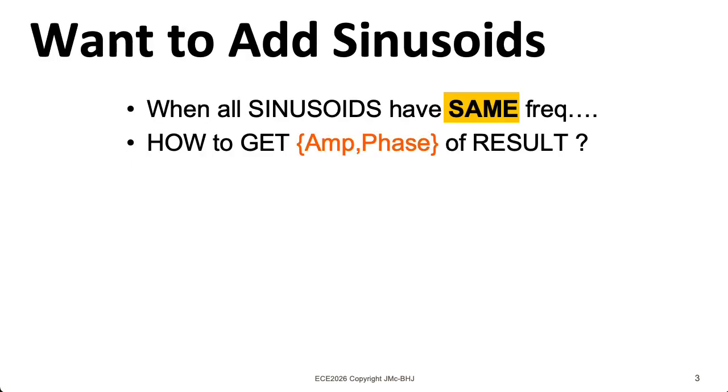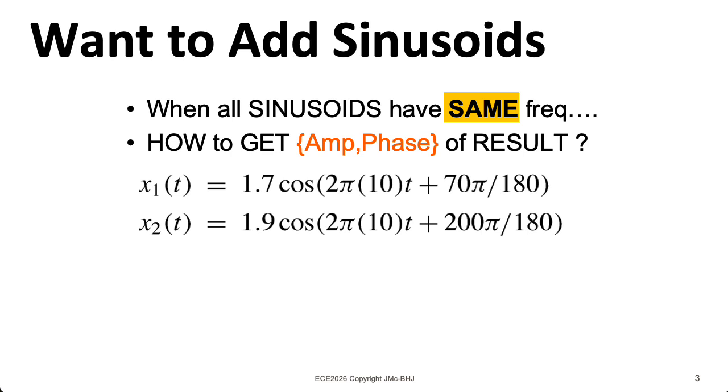Here's an example. Suppose we have these two sinusoids. They both have a frequency of 10 hertz. They have slightly different amplitudes, but very different phases. Here we represent the phases in terms of some multiple of pi, as we like to do.